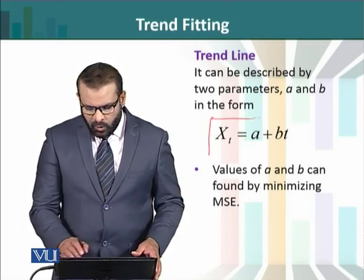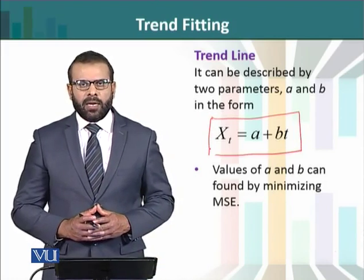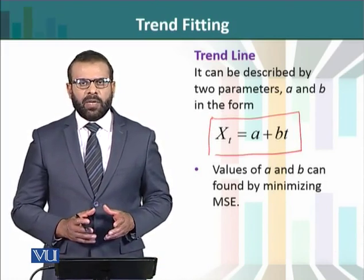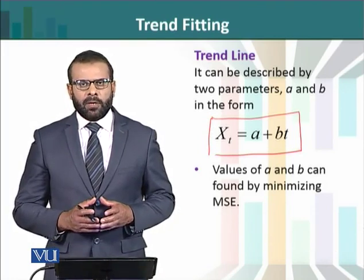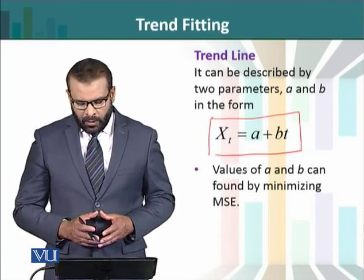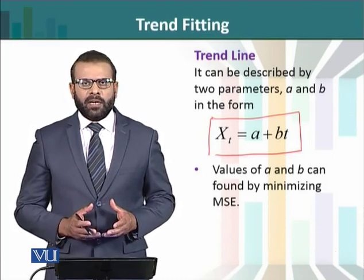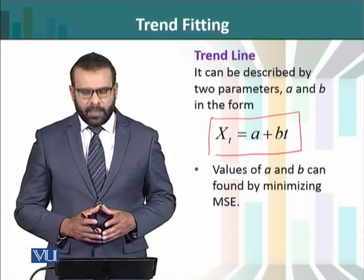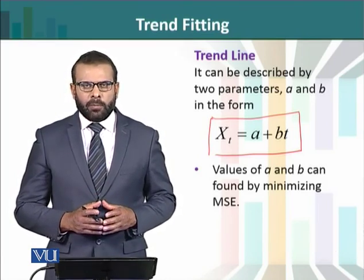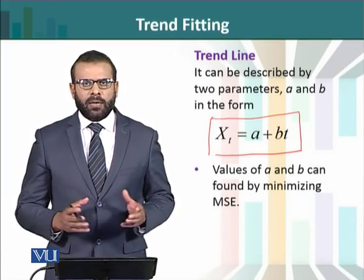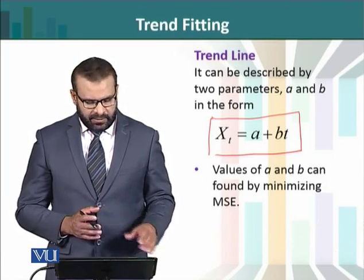اس situation میں ہمارے پاس جو model بنے گا وہ ہے a + bt، جس میں a اور b اس model کے parameters ہیں — a intercept ہے اور b slope ہے — اور t ایک time variable ہے جو independent variable کے طور پہ use ہو رہا ہے۔ ان parameters a اور b کی values کو ہم mean square error کو minimize کر کے estimate کر سکتے ہیں۔